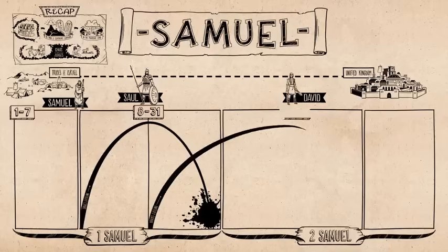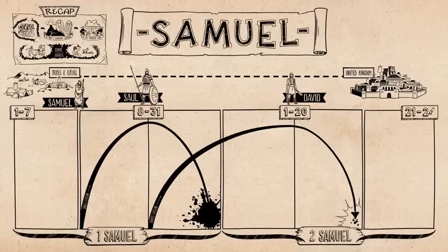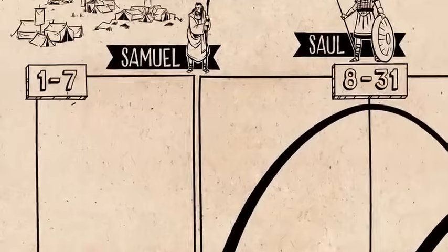The drama of Saul's demise is matched by David's exciting rise to power. David's story is also told in two movements: first he rides the wave of his success, followed by his own tragic failure and the slow self-destruction of his family and kingdom. The book concludes with an epilogue that reflects back over the whole story.